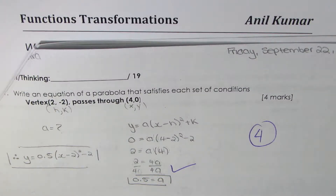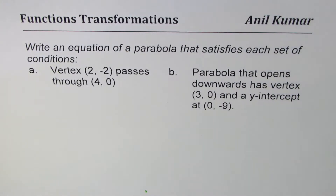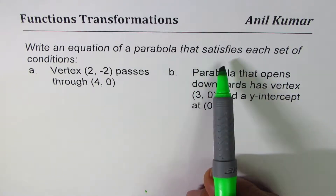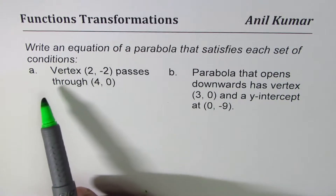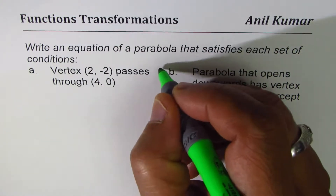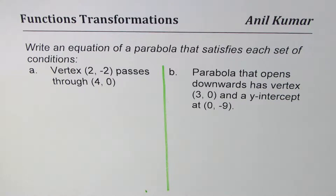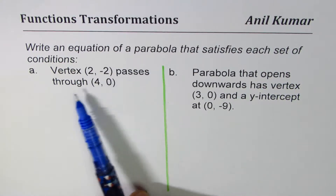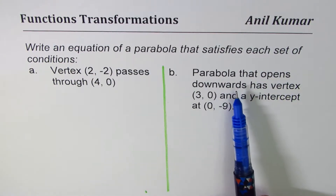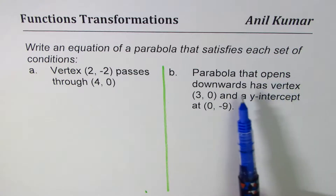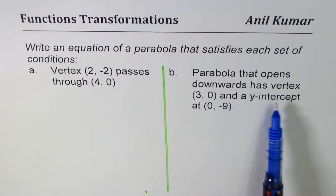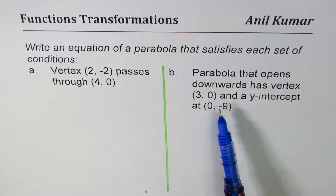I'm Anil Kumar sharing with you a few test questions. Here is a very interesting question: write an equation of a parabola that satisfies each set of conditions. We are going to write two equations. The first one is a parabola with vertex (2, -2) that passes through the point (4, 0). The second is a parabola that opens downwards, has vertex (3, 0), and a y-intercept at (0, -9).